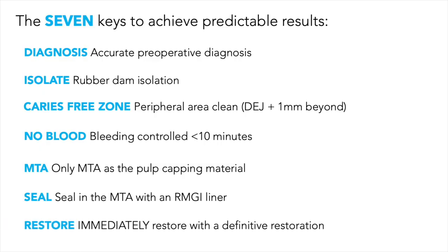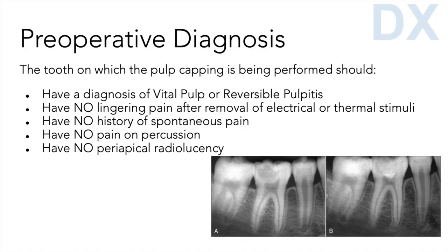Finally, we want to restore immediately with some kind of definitive restoration — in this case, some kind of composite. Make sure the tooth does not have a diagnosis of irreversible pulpitis. It's got to have a vital pulp or what we call reversible pulpitis. It should have no lingering pain after removal of any stimuli, no history of spontaneous pain, no pain on percussion, and no periapical radiolucency — in other words, the root area should look nice and intact with no lack of bone around the end of the tooth.